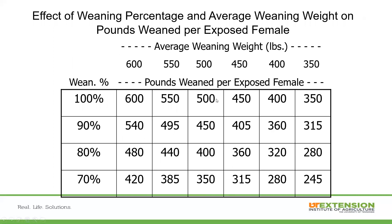When we look at weaning percentages with an example of 500 pounds at 100%, that's 500 pounds per exposed female. For every 10% decrease, you can see a 50-pound decrease. Looking at a current marketing situation with maybe $1.50 a pound for a five-weight animal, that's going to be a difference of about $75 per female in the herd. So every female in that herd for every 10% decrease is really costing $75 overall. Those weaning percentages go back to pregnancy percentages, calving rate, keeping them alive, and getting them to weaning and marketing.